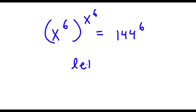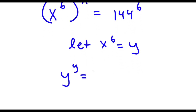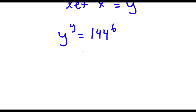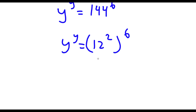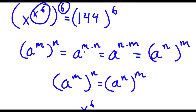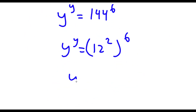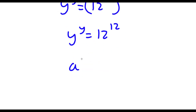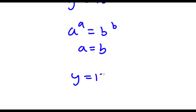Now I'm going to let x to the power of 6 equal the variable y. So now I have y to the power of y is equal to 144 to the power of 6. Now 144 is the same thing as 12 to the power of 2, so I have 12 to the power of 2 to the power of 6. Using the rule a to the power of m to the power of n equals a to the power of m times n, 2 times 6 is 12, so I have y to the power of y is equal to 12 to the power of 12. Now if a to the power of a equals b to the power of b, then a equals b. So in this case y is equal to 12.